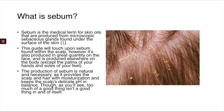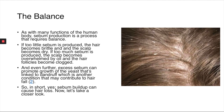This guide will focus on sebum found within the scalp, though it is also produced in great quantity on the face and elsewhere on the body. Sebum production is completely natural and necessary, as it provides the scalp and hair with moisturization and keeps the scalp's delicate pH in balance. However, too much of a good thing isn't good — if there's too little sebum, hair becomes brittle and the scalp becomes dry. If there is too much, the scalp becomes overwhelmed by oil and hair follicles become clogged.